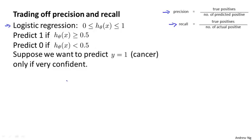Suppose we want to predict that a patient has cancer only if we're very confident that they really do. If you tell a patient they have cancer, it's going to give them a huge shock, seriously bad news, and they may end up going through a pretty painful treatment process. So maybe we want to tell someone we think they have cancer only if we're very confident. One way to do this would be to modify the algorithm so that instead of setting the threshold at 0.5, we predict y equals 1 only if h of x is greater than or equal to 0.7 — only if we think there's a 70% or greater chance they have cancer.